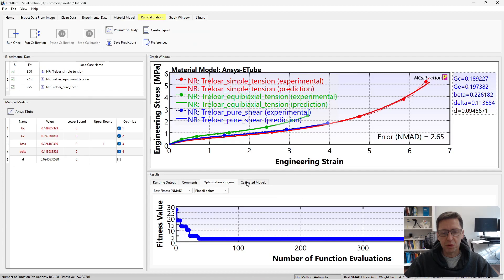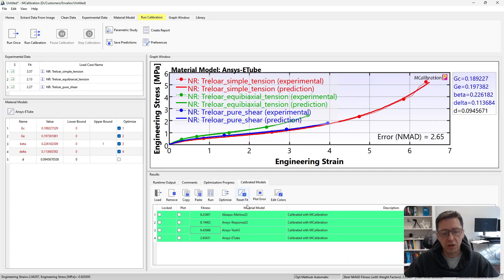I'm going to stop it after a few seconds. And we'll see that error is 2.65%. It's an excellent fit to all the data, which is pretty typical. We have multiple loading modes. The extended tube model is an excellent choice.